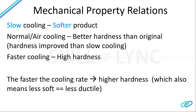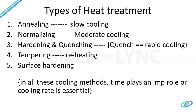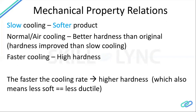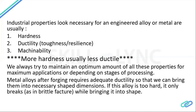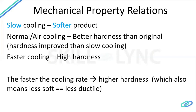Slow cooling gives a softer product — that's annealing. Hardening and quenching uses rapid cooling, giving the highest hardness — a completely transformed product versus what you started with. In the heat treatment process you're just heating, soaking, and cooling; the cooling rate is what determines your final mechanical property. Higher hardness from rapid cooling also means less ductility.